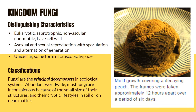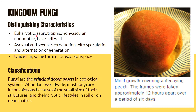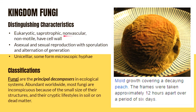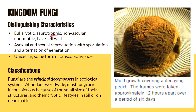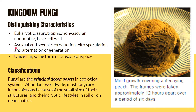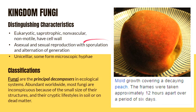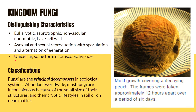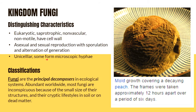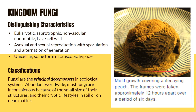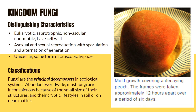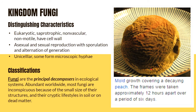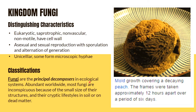Next would be Kingdom Fungi, and these are its distinguishing characteristics. They are eukaryotic and saprotrophic — they mostly feed on decaying matter. They are non-vascular, non-motile, and similar to plants, they also have a cell wall. They reproduce through asexual and sexual mechanisms with spore formation and alternation of generation. They could be unicellular while some can form microscopic hyphae. Fungi are the principal decomposers in an ecological system — that's why they're very important.